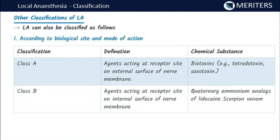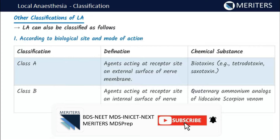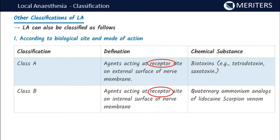The next classification is based on biological site and mode of action. There are four categories: Class A, B, C, and D. Class A acts through a receptor at the external surface of the nerve membrane. Examples include biotoxins such as tetrodotoxin and saxitoxin.